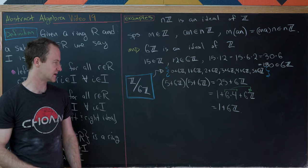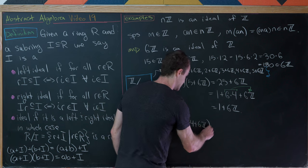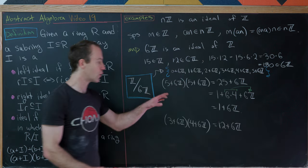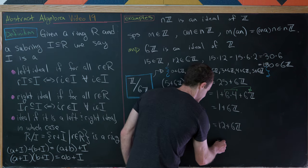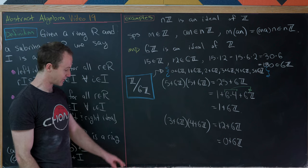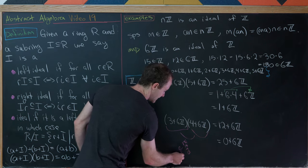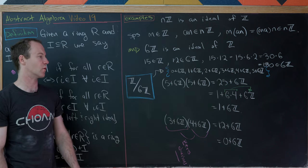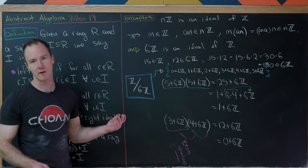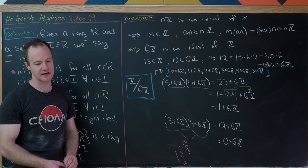Another calculation: (3+6Z)(4+6Z) = 12+6Z. Since 12 is a multiple of 6, it absorbs into 6Z, leaving 0+6Z. This shows 3+6Z and 4+6Z are zero divisors — their product is zero though neither factor is zero. The earlier calculation shows 5+6Z is a unit that is its own inverse, since its square equals the multiplicative identity.